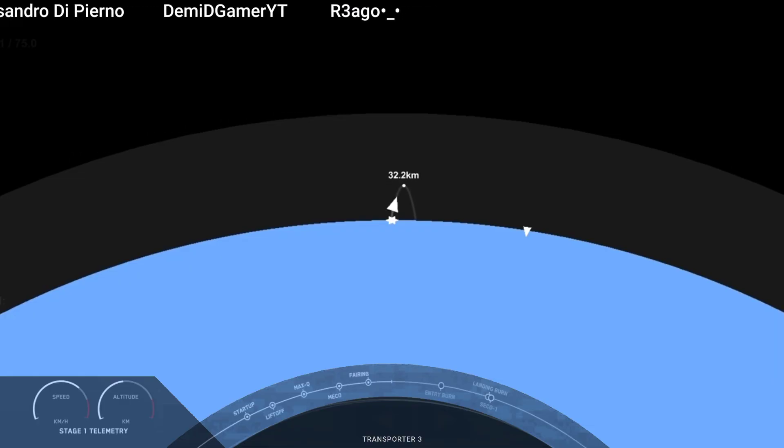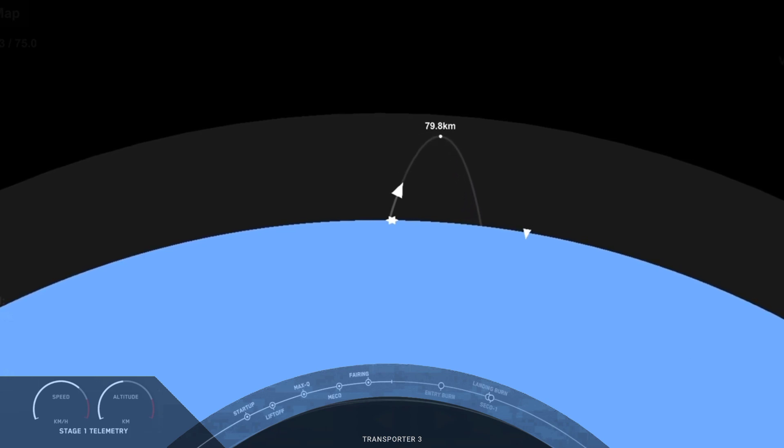Everything looking nominal with stage 1 trajectory. Now we have five events coming up in quick succession: MECO, or main engine cutoff, stage separation, stage 1 flip, second engine start 1, and the boost back burn. You can follow along with those events there on the timeline at the bottom of your screen.